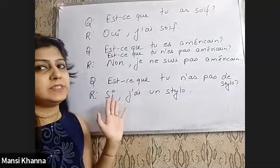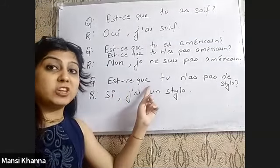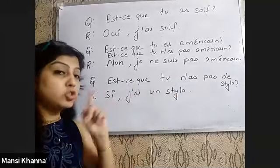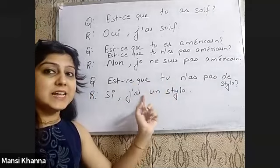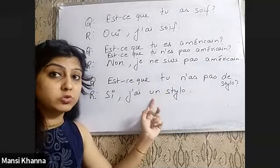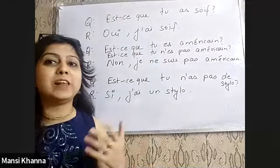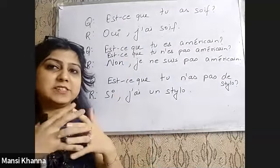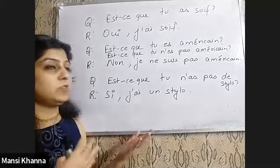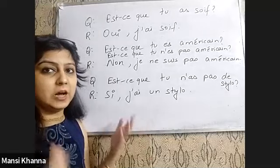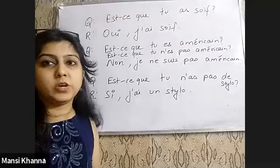When the answer starts with 'si', you know the question has to be negative. While framing that negative question, if the answer has an article involved, you will have to change the article accordingly. So you need to take care of all aspects of grammar while framing questions. I hope the three forms of interrogation and the answers starting with oui, non, and si are now clear. Thank you.